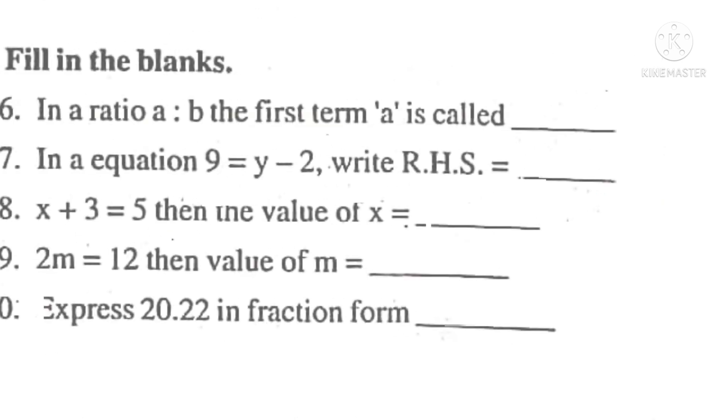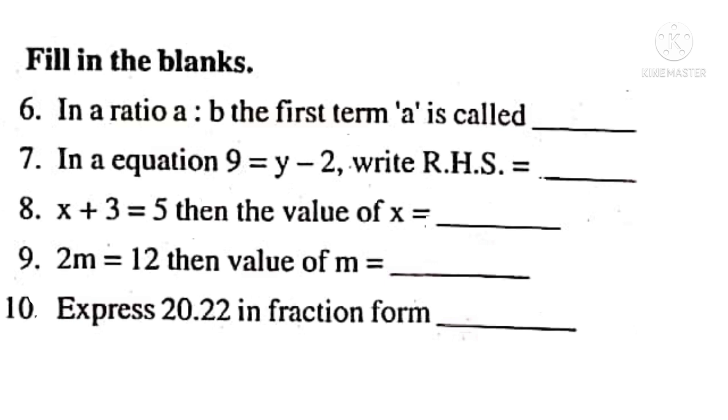Now let us take Roman number 2. Fill in the blanks. No. 6. In a ratio A to B, the first term A is called antecedent.